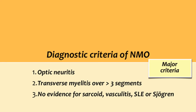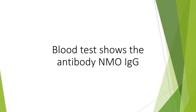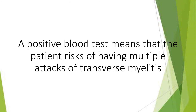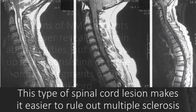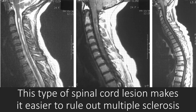Diagnosis: A blood test shows the antibody AQP4. A positive blood test means the patient risks having multiple attacks of transverse myelitis. MRI scans of NMO patients hardly ever reveal brain abnormalities, but will show lesions consisting of three or more segments of the spinal cord, making it easier to rule out multiple sclerosis.